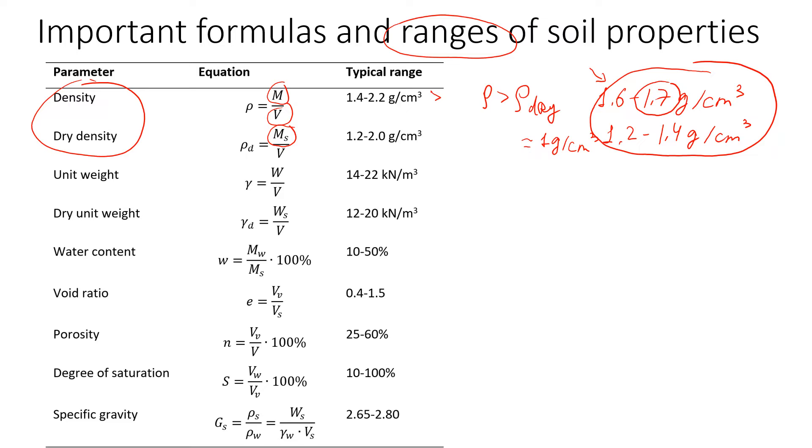Next is unit weight. Unit weight correlates well with density. The way we correlate unit weight and density is unit weight equals density times g, which is gravitational acceleration, 9.81. That's the value we use. In this case, we get our value in kilonewtons per cubic meter if the density we use is grams per cubic centimeter.